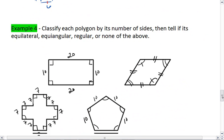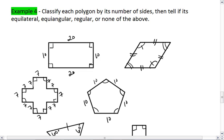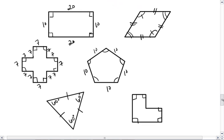So let's work on example 4. Classify each polygon by its number of sides, then tell if it's equilateral, equiangular, regular, or none of the above. Try this one on your own first, and then resume the video when you're ready to check the solution.